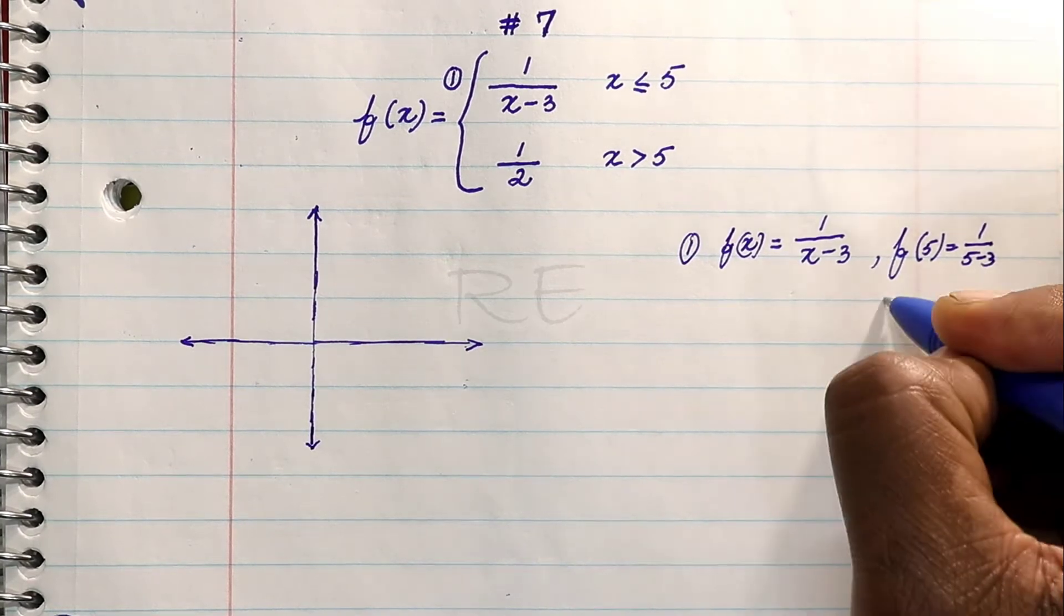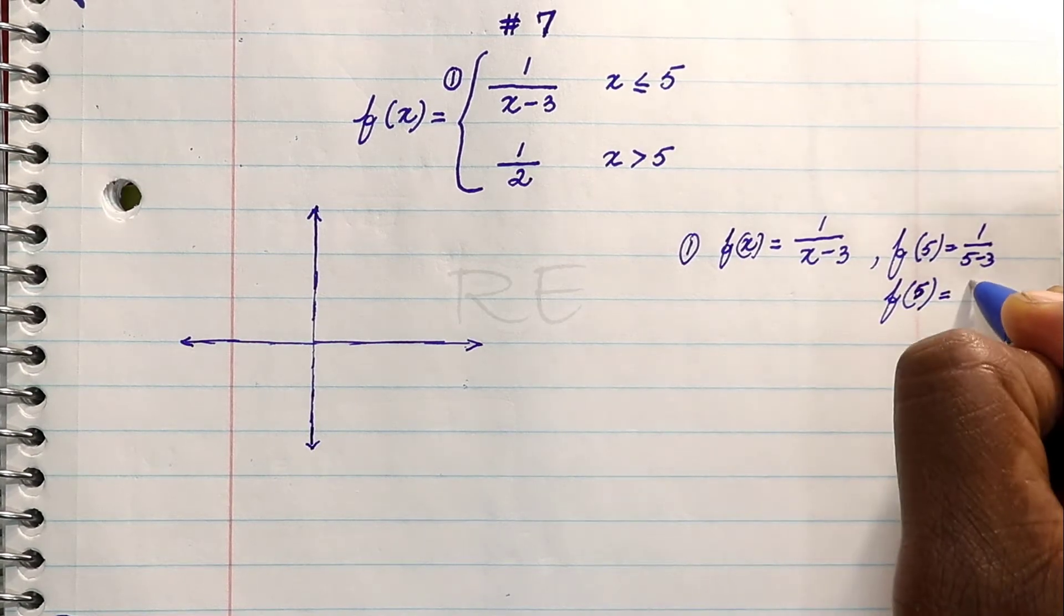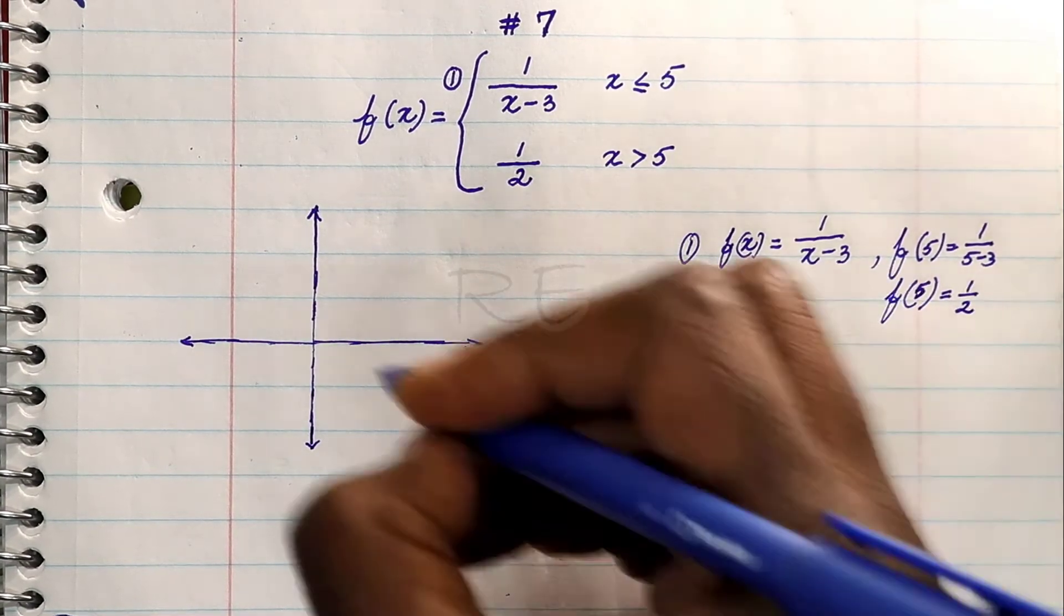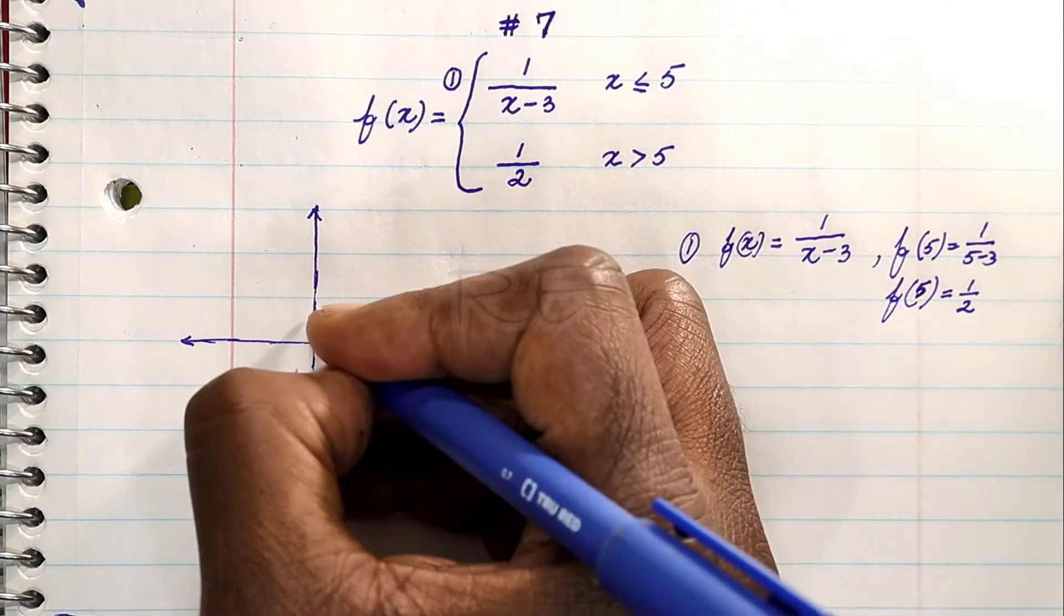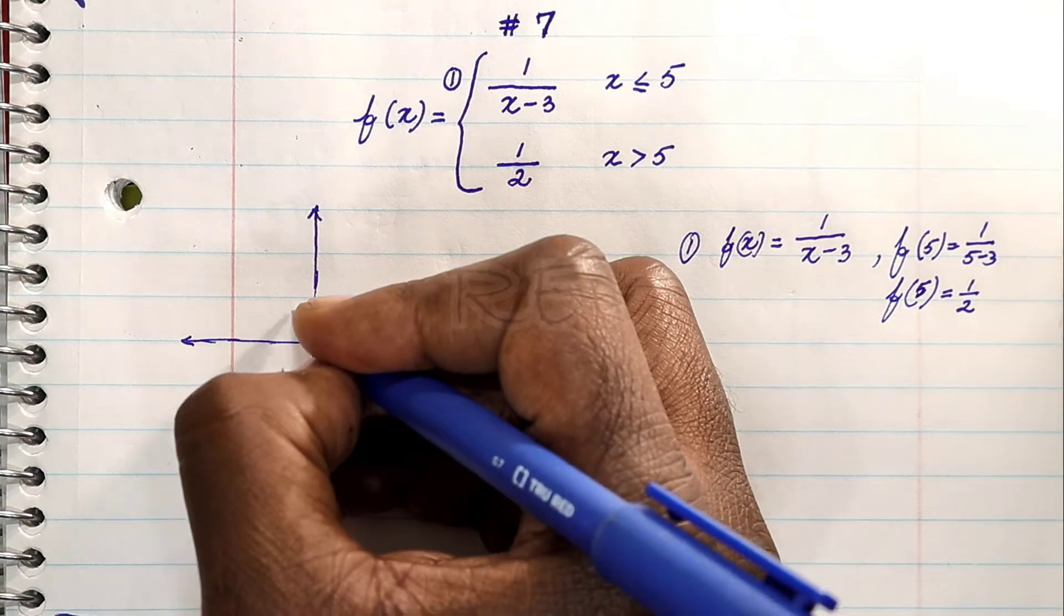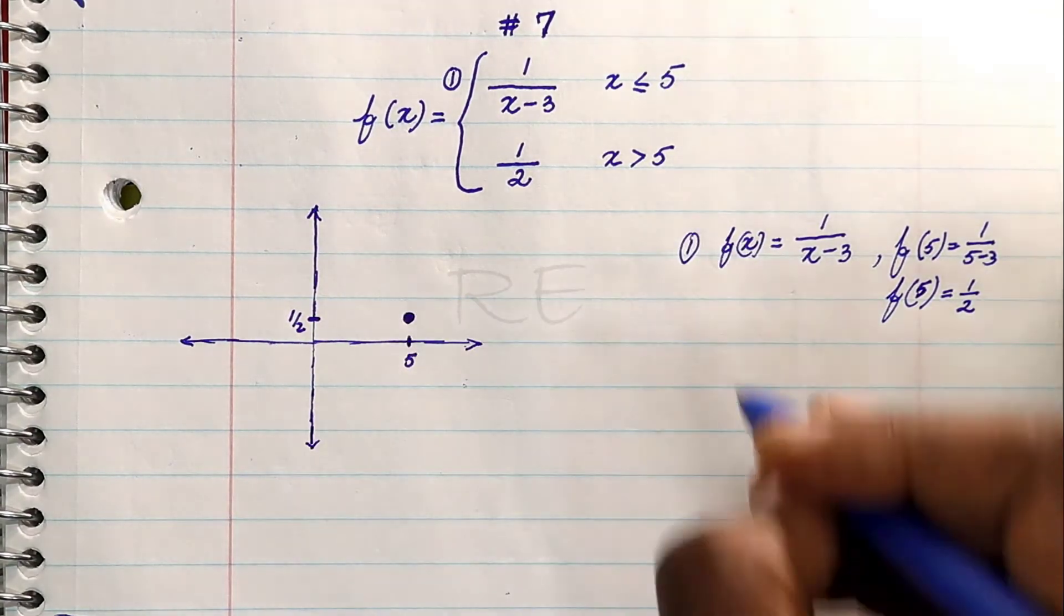So 5 is included. We can calculate f(5). f(5) is 1 over 5 minus 3, which is one half. So the image of 5 is one half, and it's a filled circle.